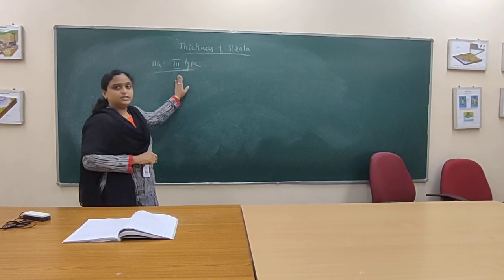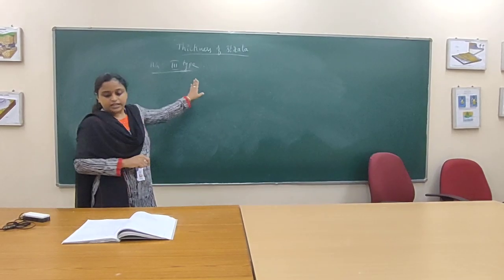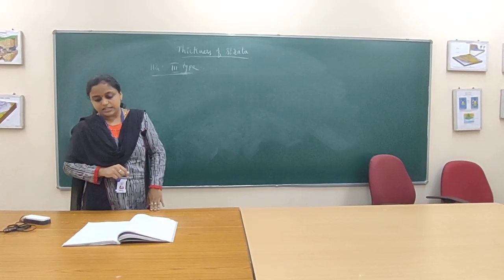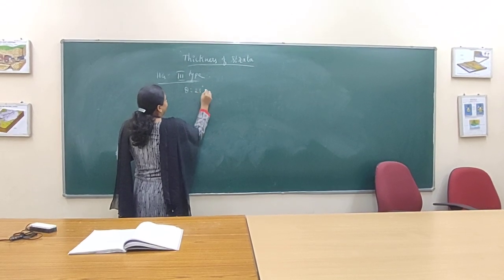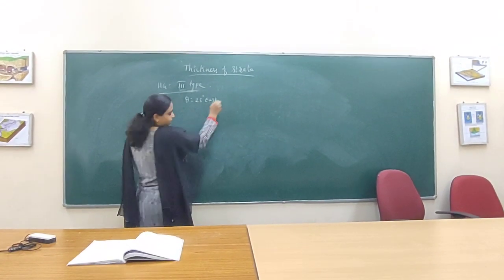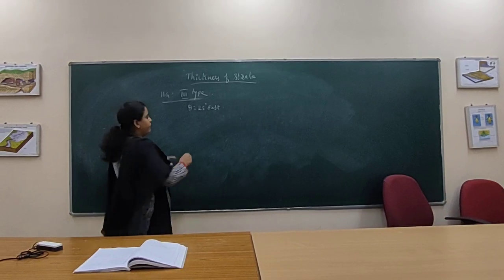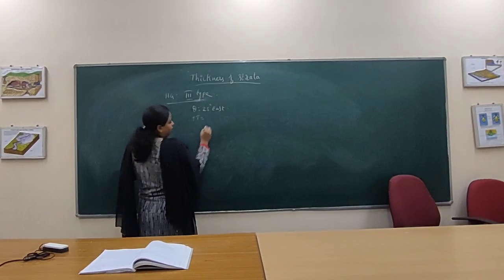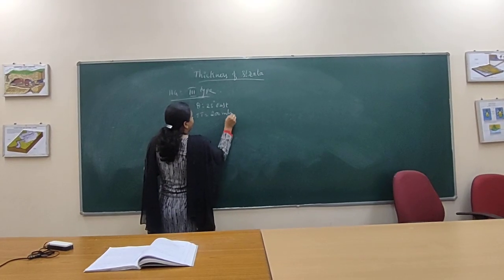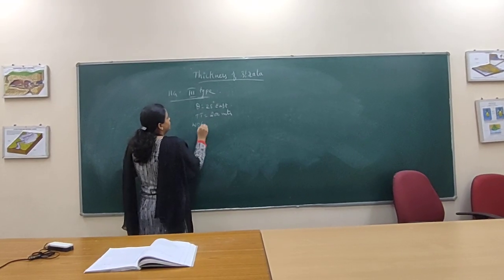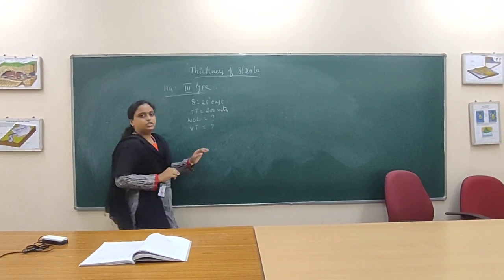This problem is about the thickness of a particular type of layer in horizontal ground surface. The first question gives the following data: theta is equal to 25 degrees. Another given data is the true thickness, which will be 200 meters. You have to calculate the width of outcrop and vertical thickness.